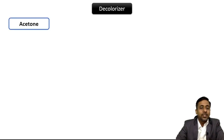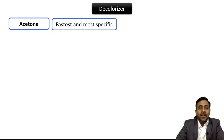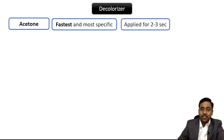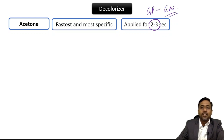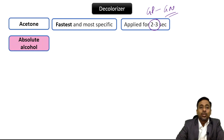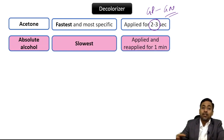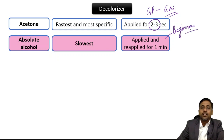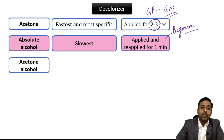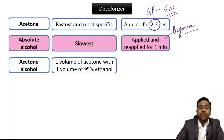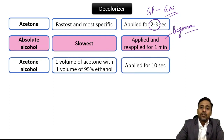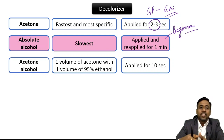The decolorizer commonly used is acetone — it is the fastest and most specific, applied for only two to three seconds. If applied for more than this duration, it leads to over-decolorization and converts gram-positive into gram-negative. For beginners, absolute alcohol is best as it is the slowest and can be applied for up to a minute. Routinely, acetone-alcohol (one volume of acetone with one volume of 95% ethanol) is best — it can be applied for 10 seconds.